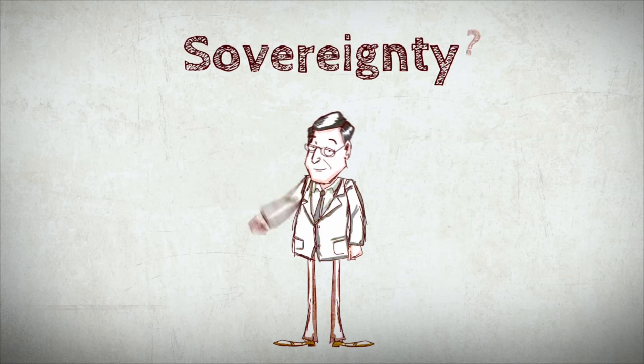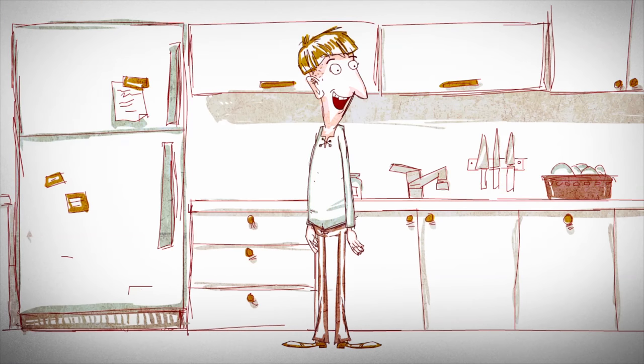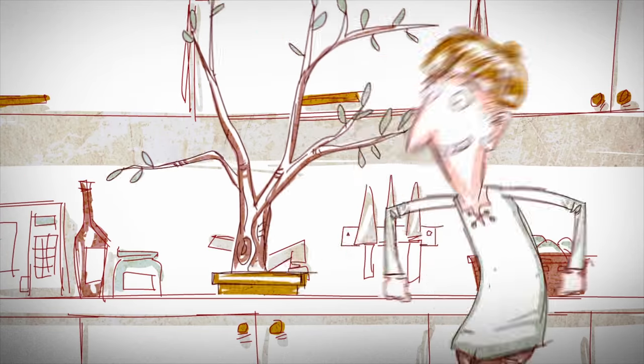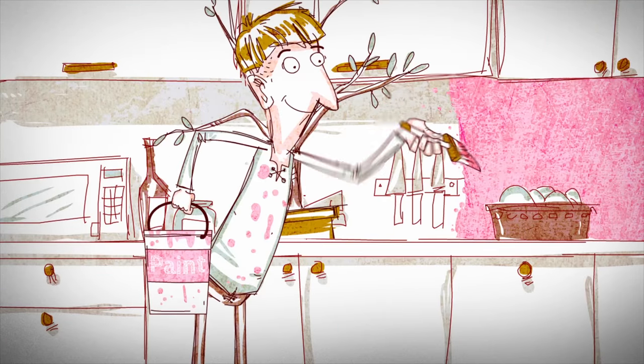To understand what sovereignty is, think of a person's home. In his home, one can make quite extravagant decisions, with no one allowed to interfere. Painting the kitchen pink, for instance.